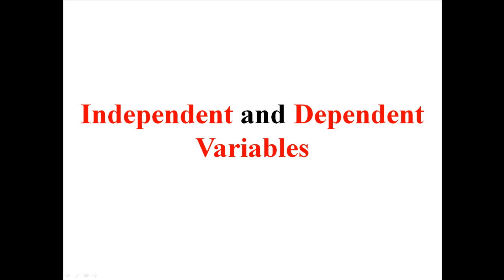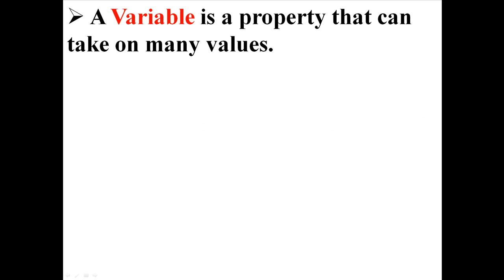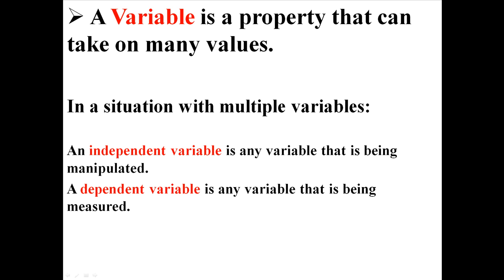Now this should end up being a pretty short video, but I still wanted to talk about independent and dependent variables, because a lot of people seem to have trouble remembering what the difference is between those two things. First of all, remember that a variable is a property that can take on many values. In a situation with multiple variables, an independent variable is any variable that is being manipulated, and a dependent variable is any variable that is being measured.